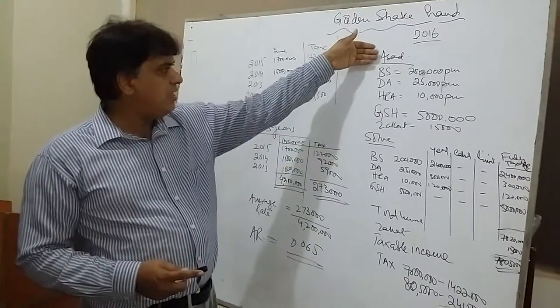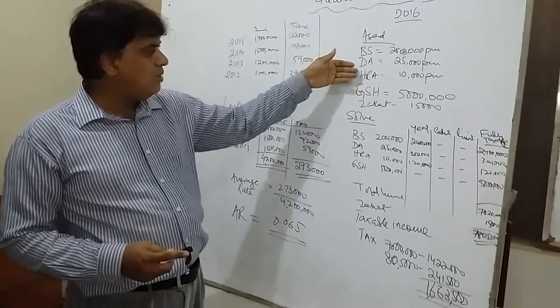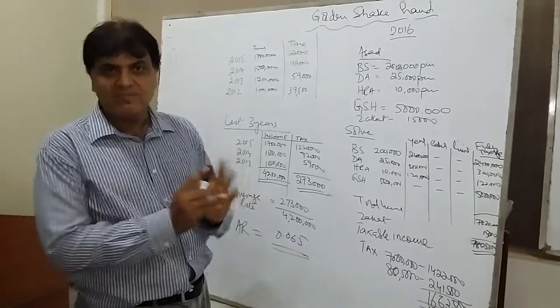Now the question is: the basic salary is 2,000,000 per month, dearness allowance is 25,000 per month, and house rent allowance is 10,000 per month. This is Golden Shake Hand: 50,000,000, that is 5 million.